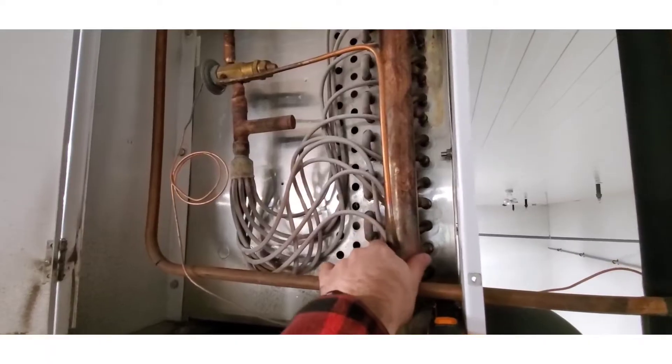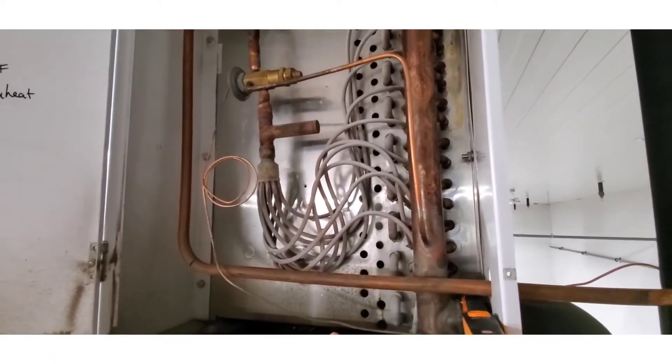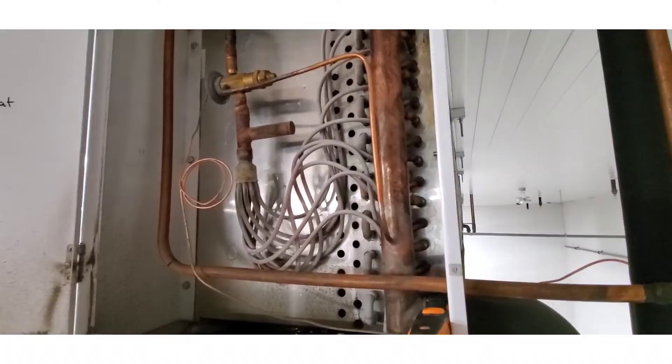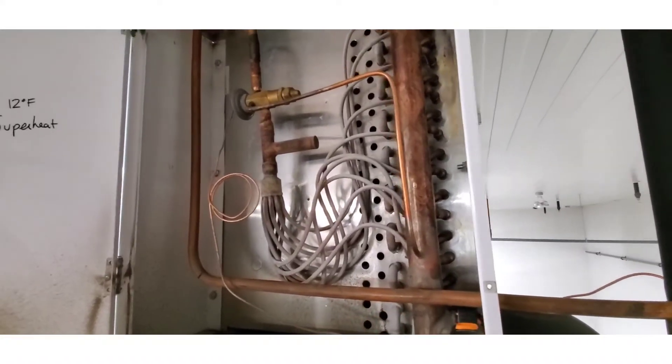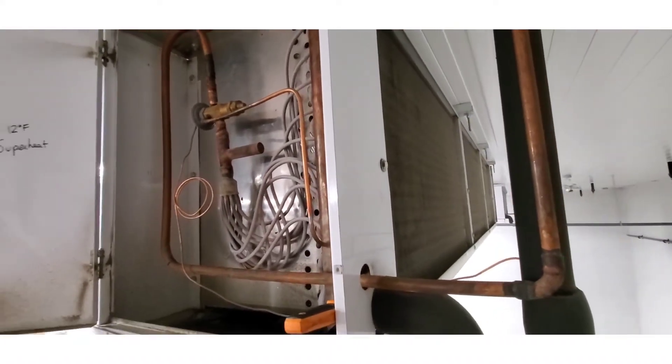If we have too much superheat in this evap, that means we're underfeeding refrigerant to the evaporator. If we're underfeeding refrigerant, we're not going to get the net refrigeration effect that the evaporator is capable of doing.